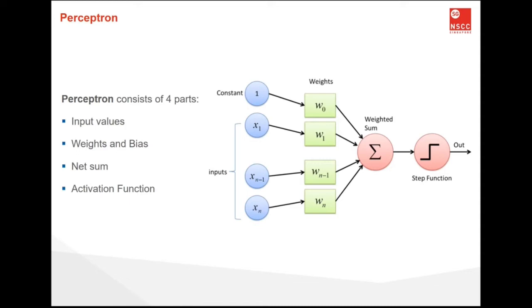A perceptron consists of four parts: input values or input layer, weights and biases, net sum, and activation function. In the first step, all the inputs x are multiplied with their corresponding weights w, and it will add all the multiplied values and call them weighted sum. Then, an activation function will be applied on the weighted sum in order to perform nonlinear transformation.